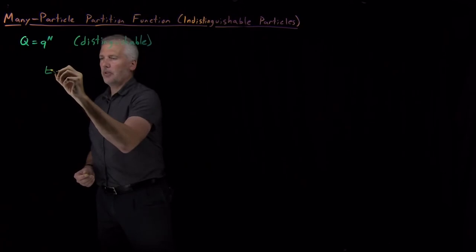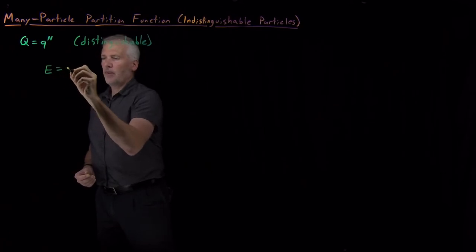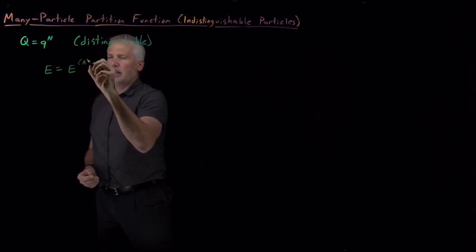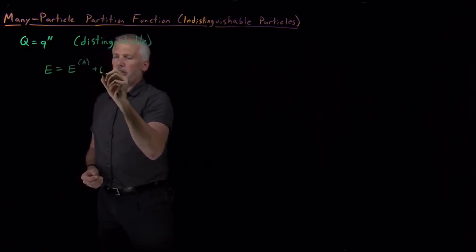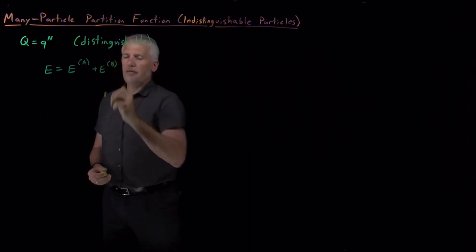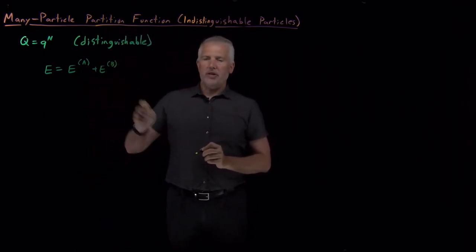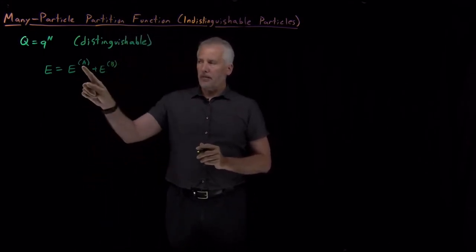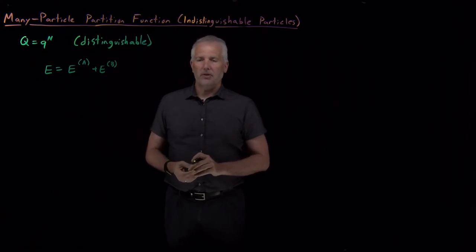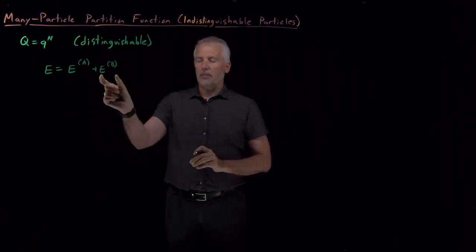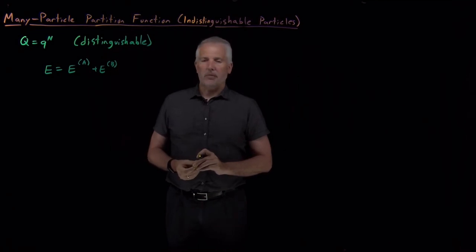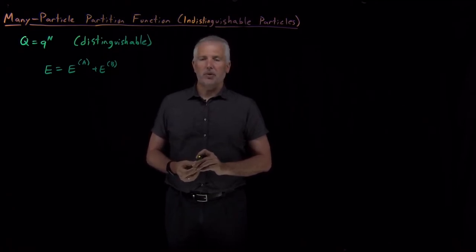The assumption of distinguishability was made when we said the total energy can be broken down into the sum of energy for part A and energy for part B — we put labels on the individual parts of the system. So if we're talking about two identical molecules, we're assuming we can tell the difference between molecule one and molecule two.